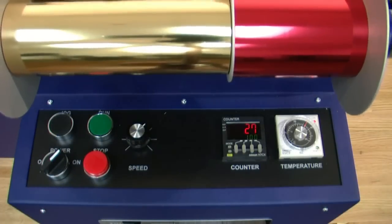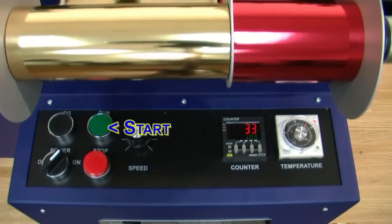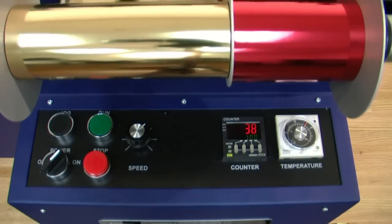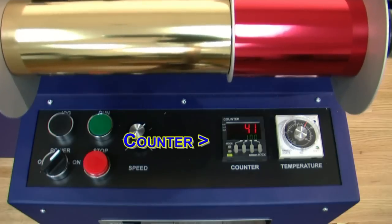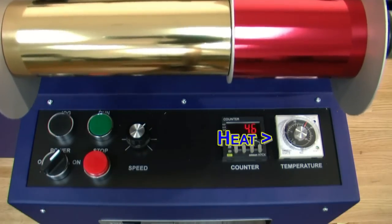The control panel includes a power switch, jog button, start button, stop button, motor speed control, batch counter with auto shut off, and a temperature control accurate to within plus or minus one degree.